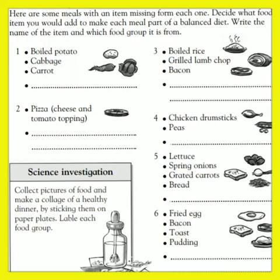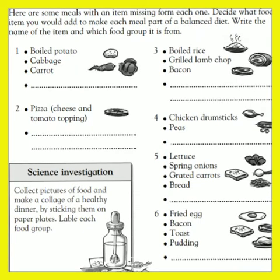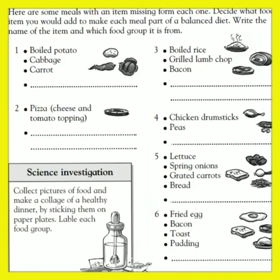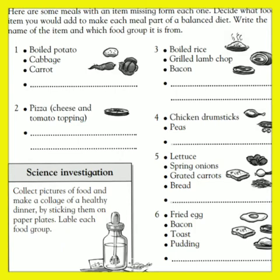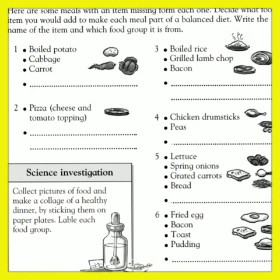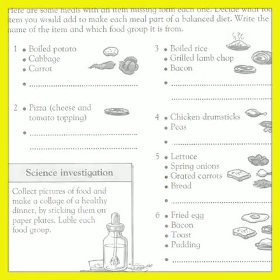Third group: rice and meat — vitamins and minerals are missing, so we add carrot. Fourth group: chicken and peas — carbohydrate is missing, so we add potato. Fifth group: spring onion, carrot, and bread — protein is missing.